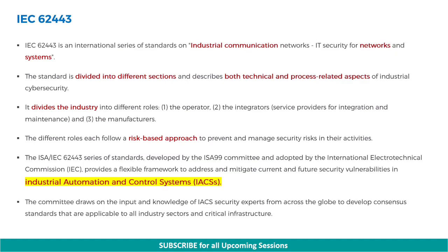IEC 62443 is an international series of standards on industrial communication networks — that is, IT security for networks and systems. The standard is divided into different sections and describes both technical and process-related aspects of industrial cybersecurity. It divides the industry into three different roles: the operator, the integrators (which includes service providers for integration and maintenance), and the manufacturers.